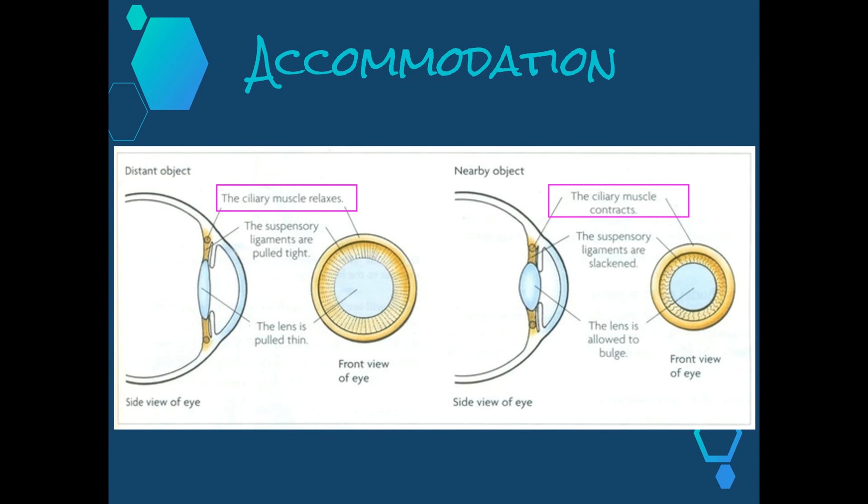So here we can see in the two different types of vision that we have. In the distant object, the ciliary muscles around the outside of the pupil relax, whereas in a nearby object, those muscles contract. This causes the suspensory ligaments to either become tightened or relax themselves as well, which causes the lens to become thicker when looking at nearby objects or thinner when looking at distant objects.